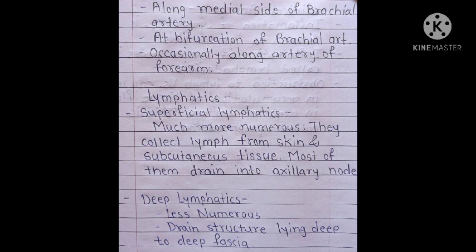Regarding lymphatics: superficial lymphatics are much more numerous and collectively drain the skin and subcutaneous tissue — most of them drain into the axillary nodes. Deep lymphatics are less numerous and drain the structures lying deep to the deep fascia.